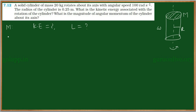These two we need to find out. Under investigation, the mass of the cylinder is given, that is equal to 20 kg, and angular speed omega is equal to 100 radians per second, and radius R is equal to 0.25 meter.